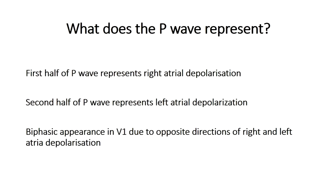The P wave represents atrial depolarization, which usually starts in the right atrium and then spreads to the left atrium before moving on to activate the ventricular system. The first one-third to 50% of the P wave is reflective of right atrial depolarization, whereas the last one-third to one-half is representative of left atrial depolarization.